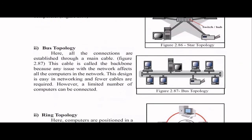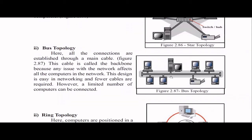Next is bus topology. There is a main cable — also called the backbone — and all computers connect to it. The problem is that if the backbone fails, the whole topology fails. However, this is easy to set up and requires very few cables. If one individual computer fails, the rest of the network is unaffected. Only a limited number of computers can be connected in this topology.